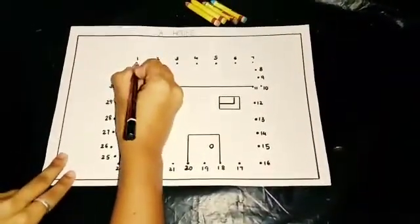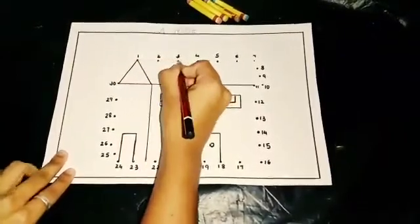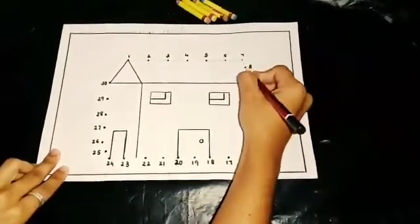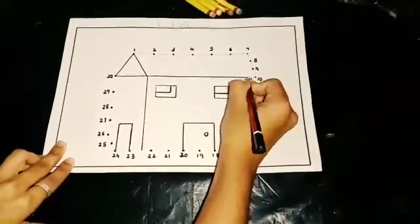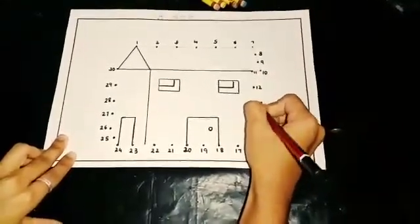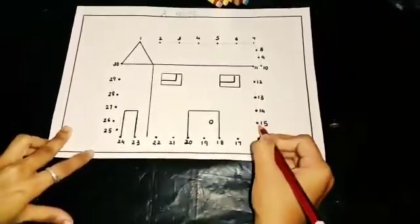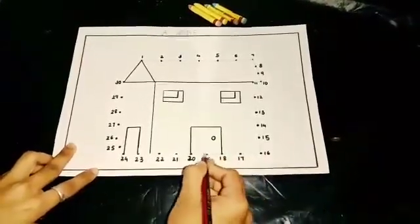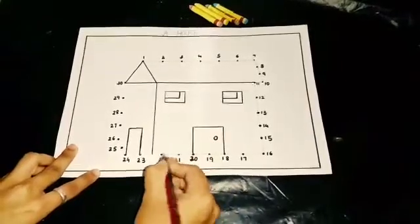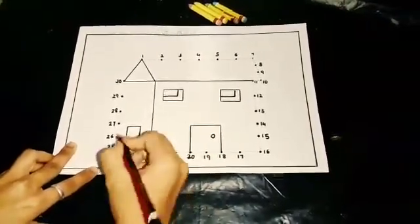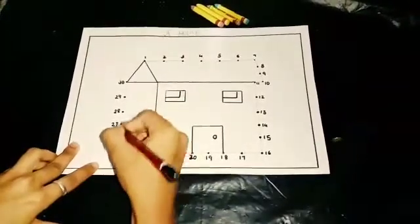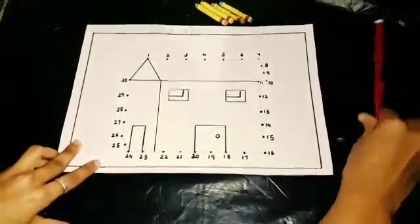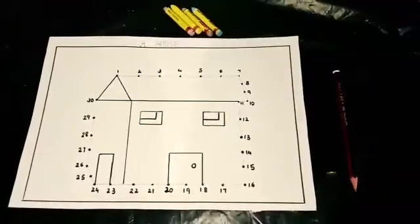This is number 1. 1, 2, 3, 4, 5, 6, 7, 8, 9, 10, 11, 12, 13, 14, 15, 16, 17, 18, 19, 20, 21, 22, 23, 24, 25, 26, 27, 28, 29, 30. Now we will make a border with a black sketch pen.